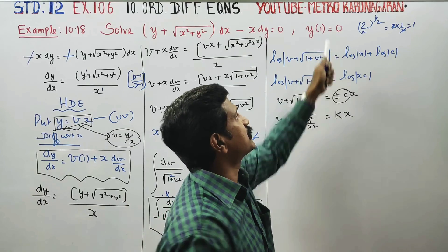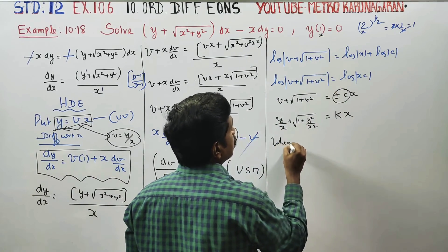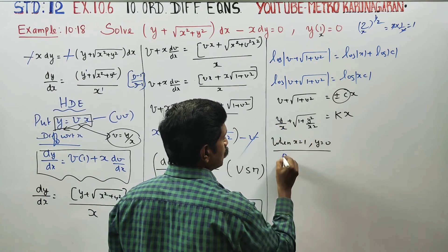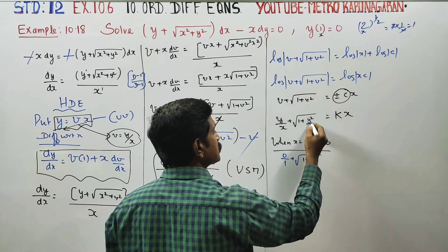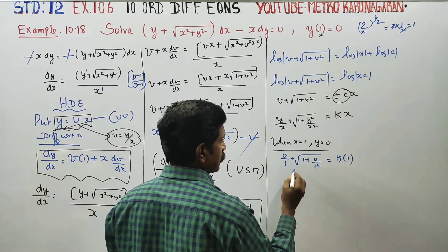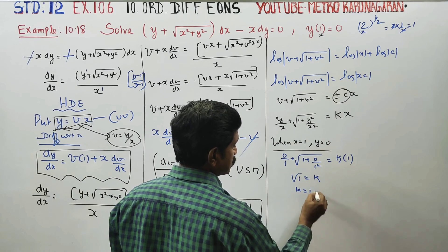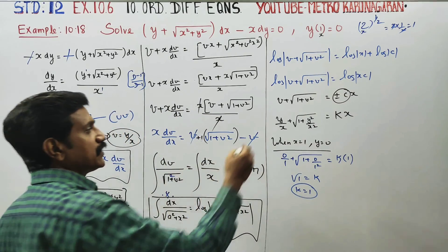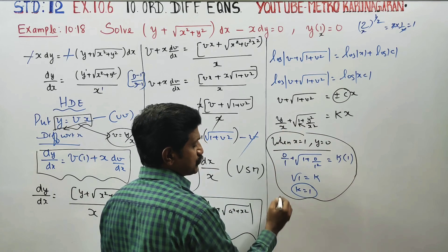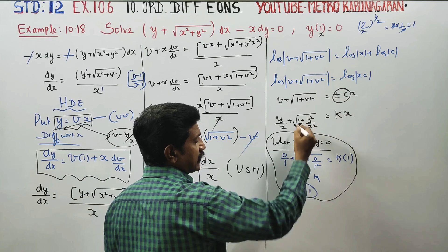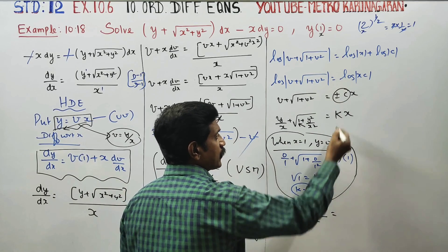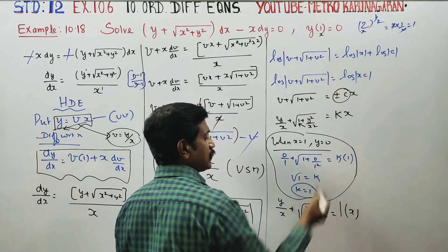Substitute y equal to 0: 0 by 1 plus root of 1 plus 0 squared equals k into 1. So root of 1 equals k, therefore k is equal to 1.